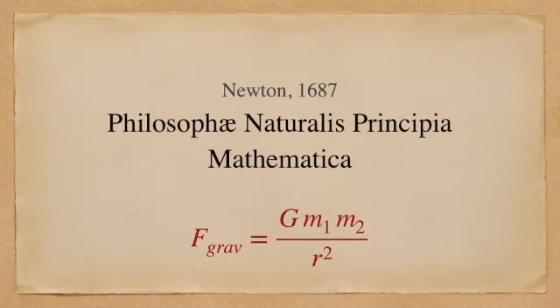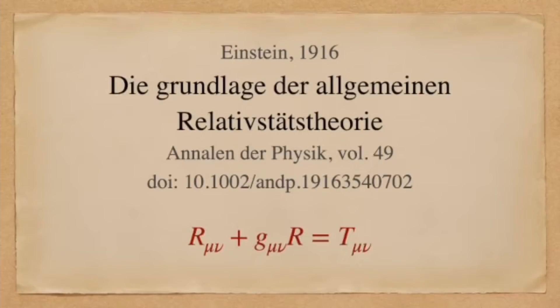As I discussed last time, Newton described gravity as the attractive force that operates between masses. In contrast, Einstein suggested that gravity is the propensity of objects to move along geodesics that follow the curvature of space-time. From this perspective, gravity is not a force at all — simply a geometric consequence of the curvature of space-time.